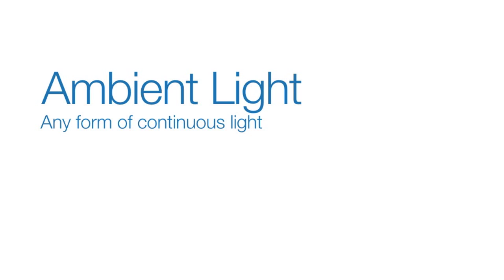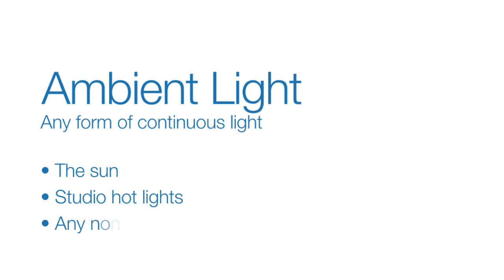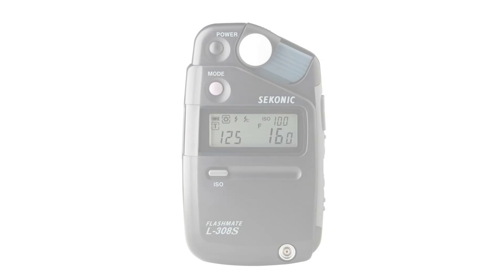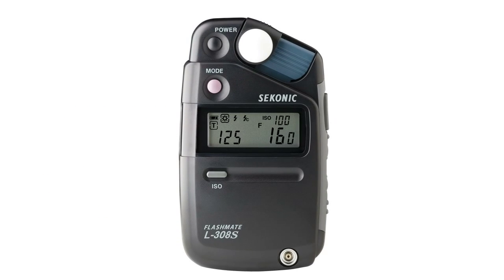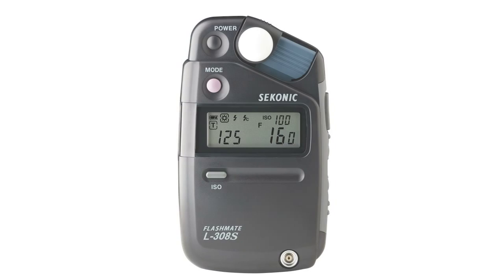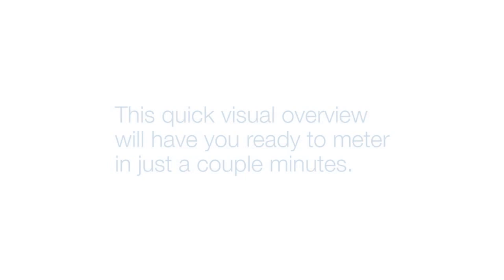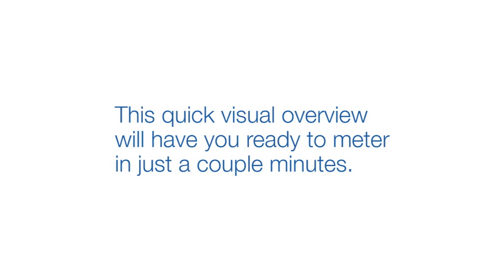Ambient light is any form of continuous light — for example, the sun, studio hot lights, or any non-strobe light. The L308S makes it simple to get accurate exposures in any ambient light situation. This quick visual overview will have you ready to meter in just a couple of minutes.